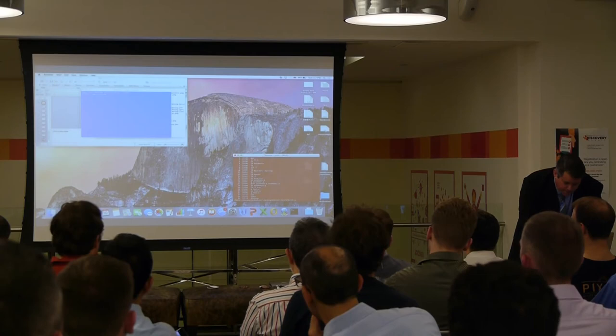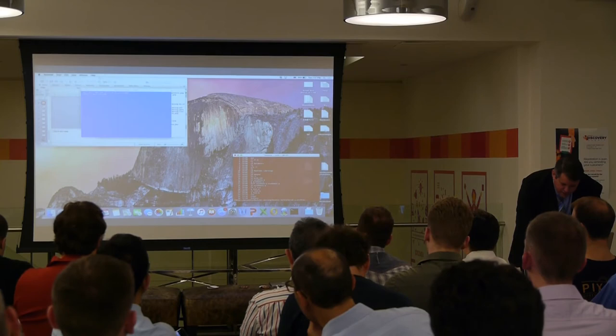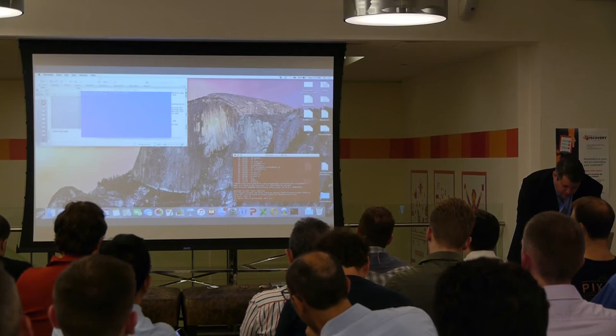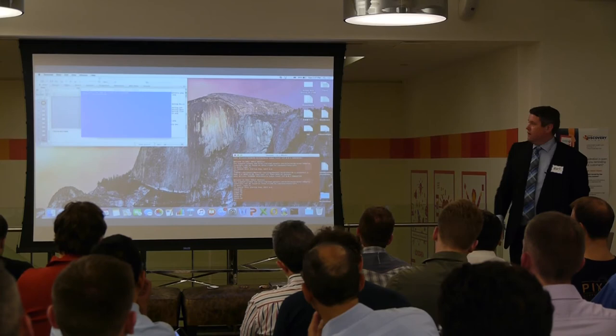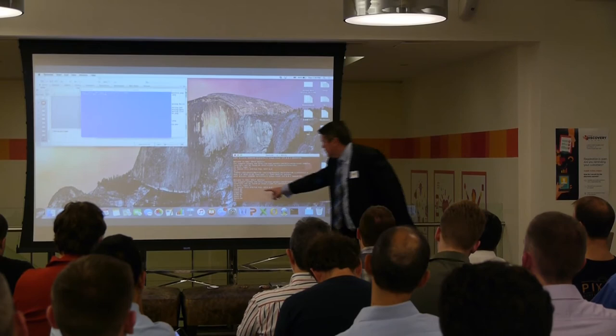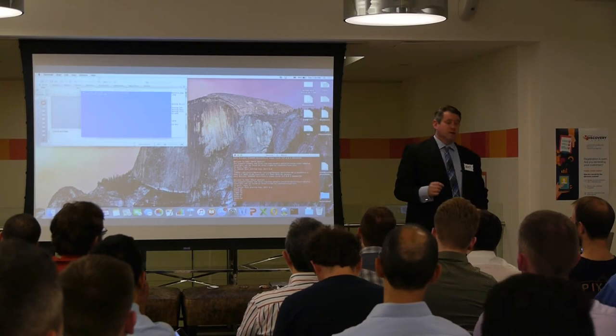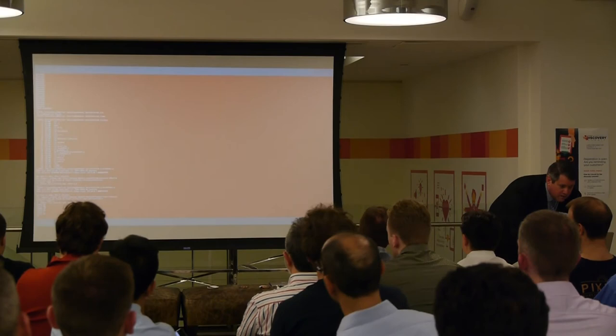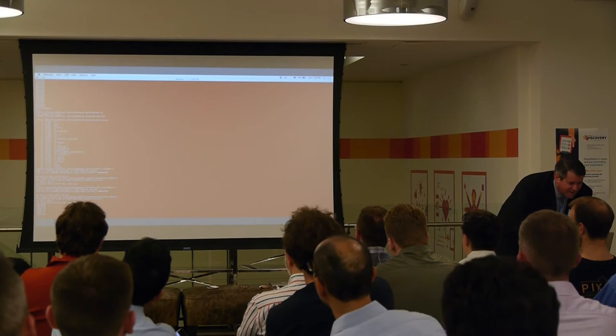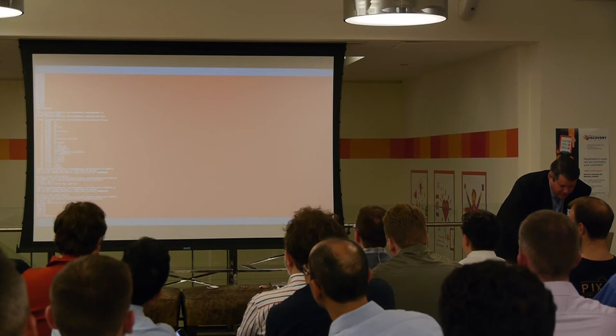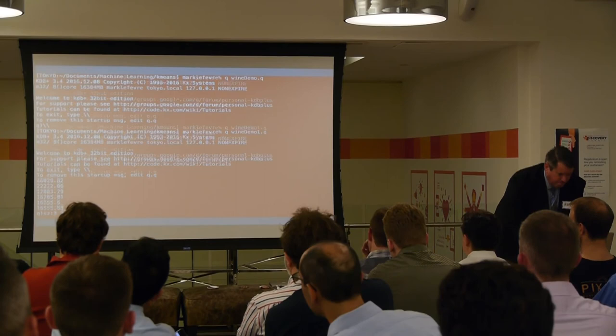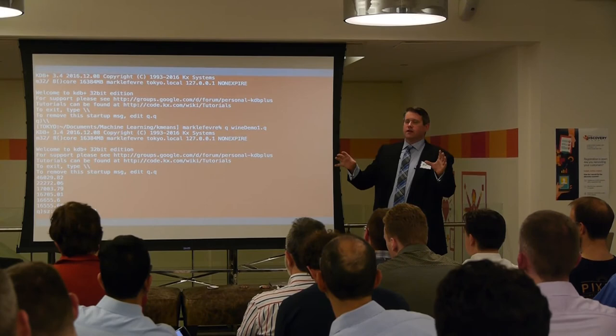This is the cost function output, which converges down — it runs through all iterations and what these numbers represent is the sum of distances from each centroid to each assigned data point. You can see it converged quite quickly.